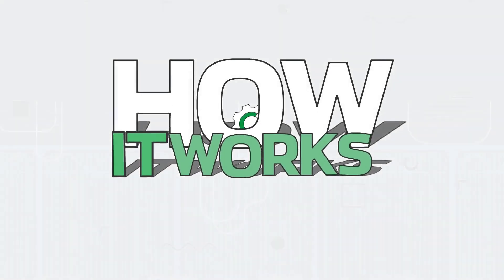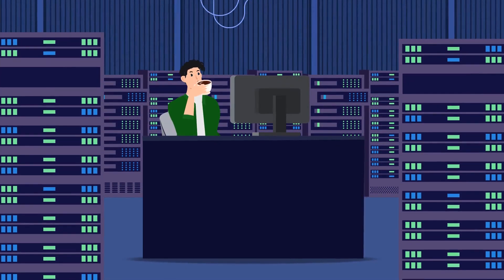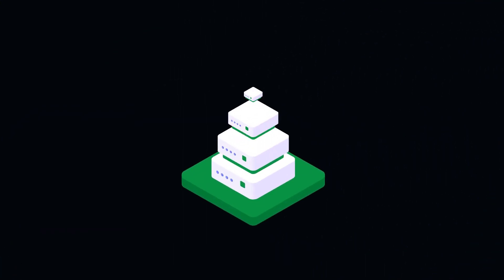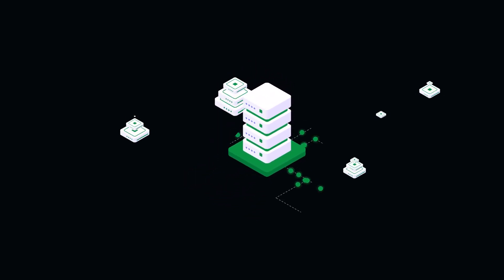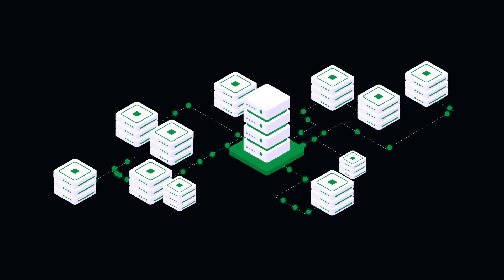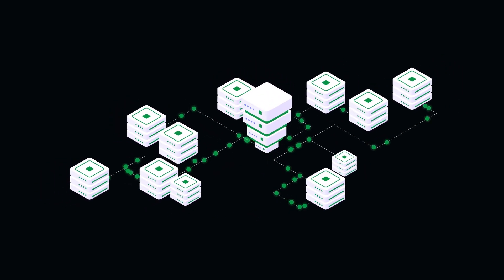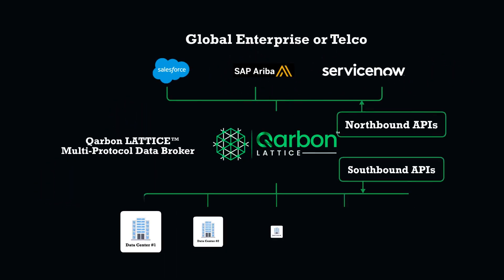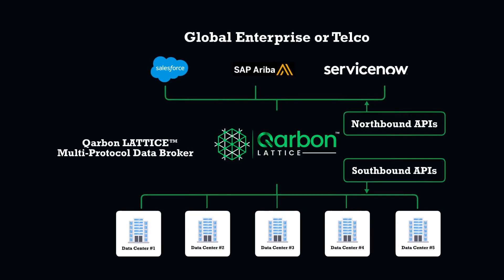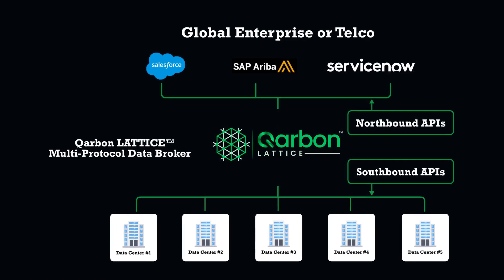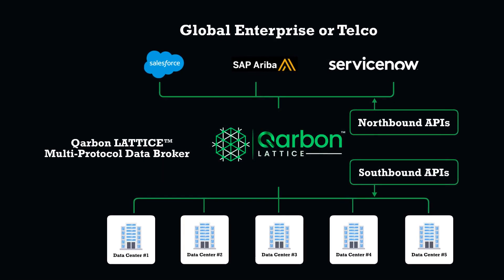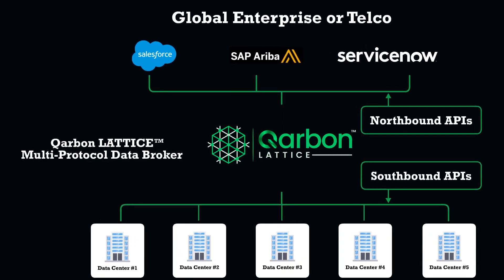So how does Carbon Lattice work? Let me show you. Carbon Lattice is the layer between applications on either side — the data center and the workflow management system of choice — which then translates multiple different API call formats in real-time.